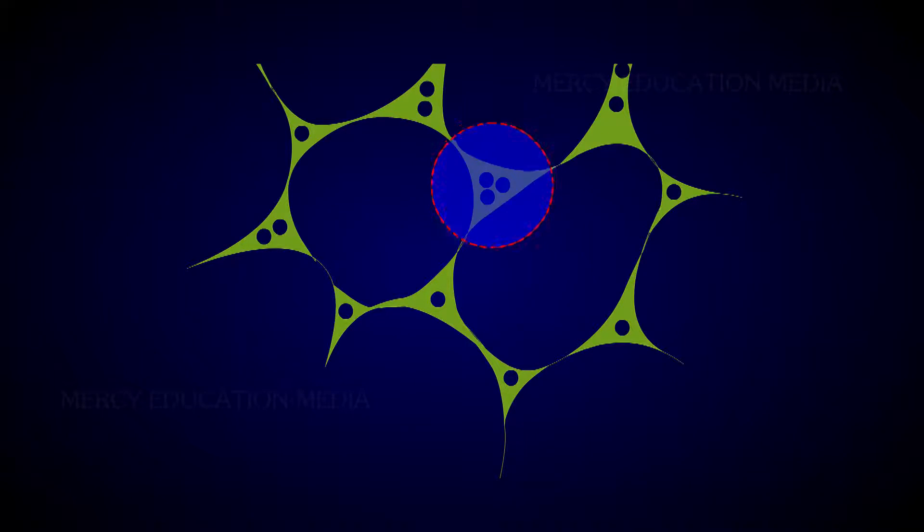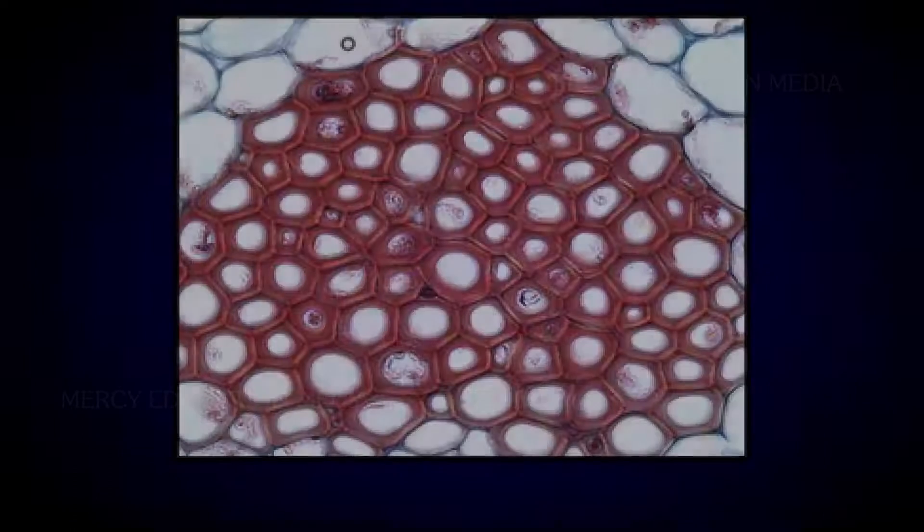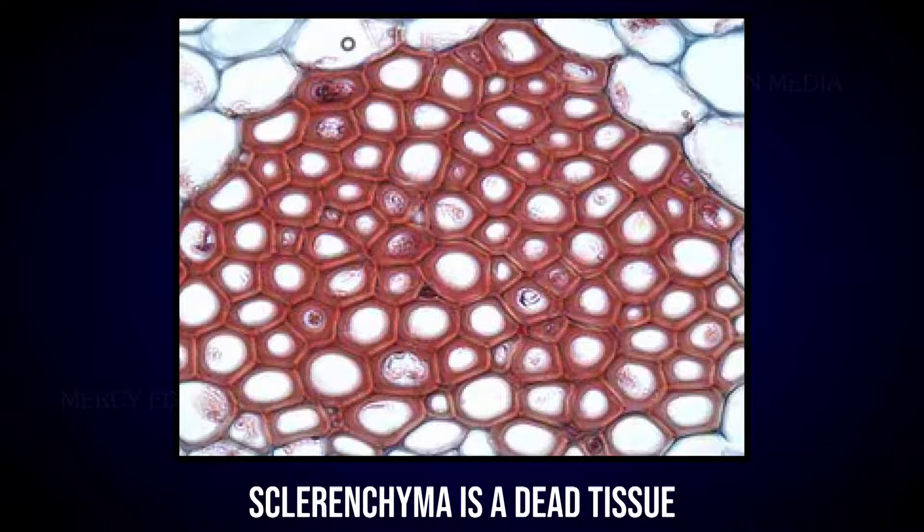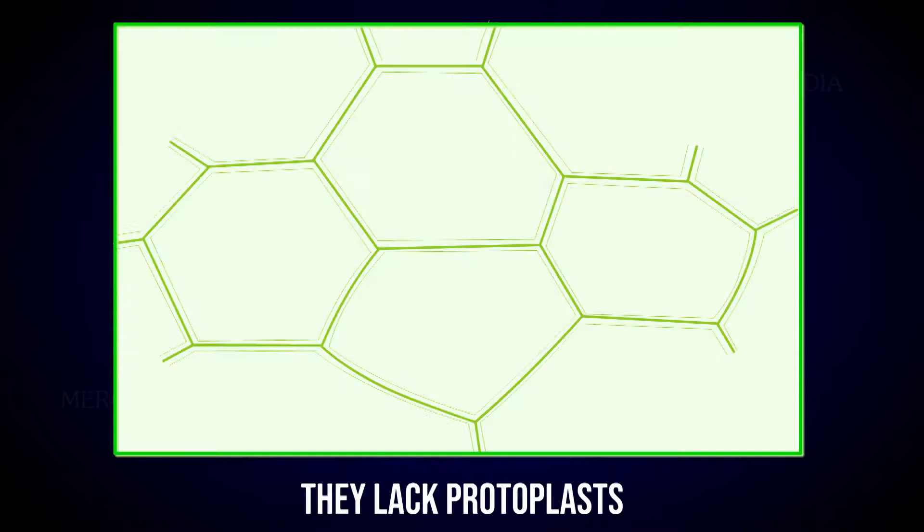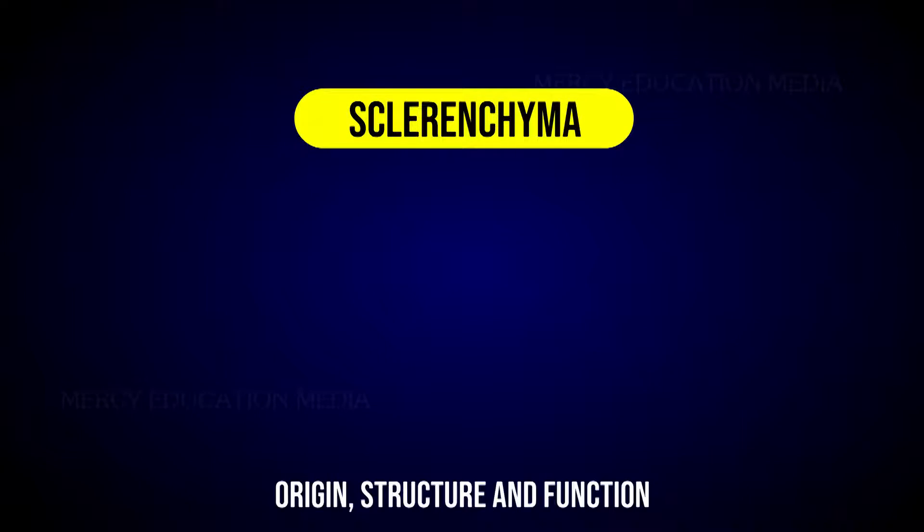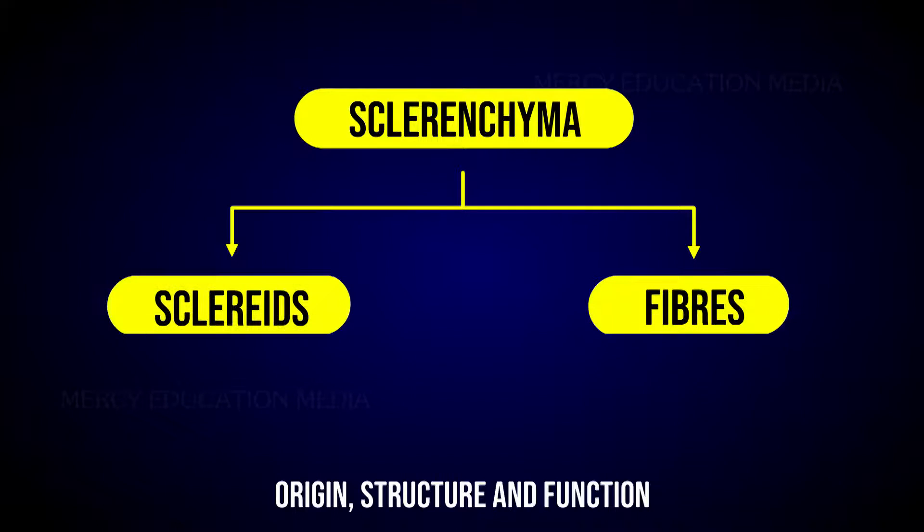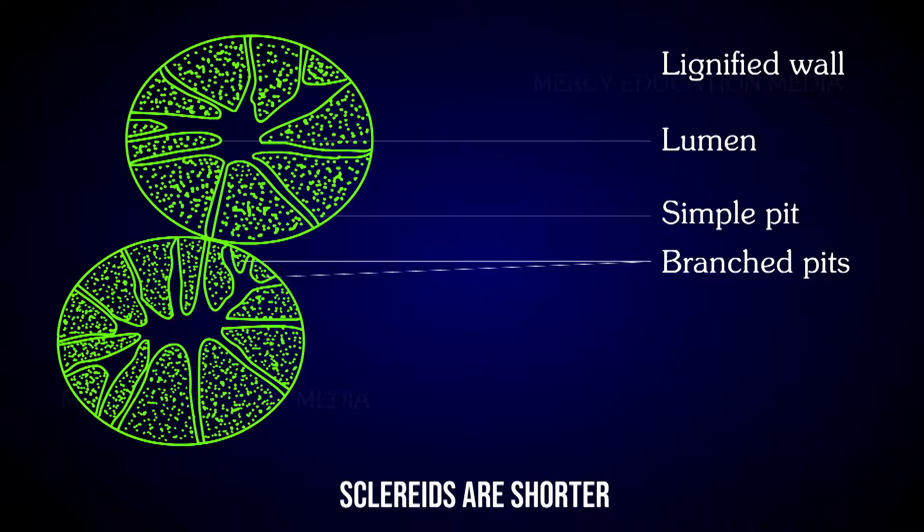This type is called lacunate collenchyma. Let us know about sclerenchyma. Sclerenchyma is a dead tissue. The cells have lignified secondary walls. They lack protoplasts. On the basis of origin, structure, and function, sclerenchyma is divided into two types: scleroids and fibers. The scleroids are different from fibers in the following respects: scleroids are shorter, whereas fibers are longer. Scleroids possess numerous pits as compared to the fibers.